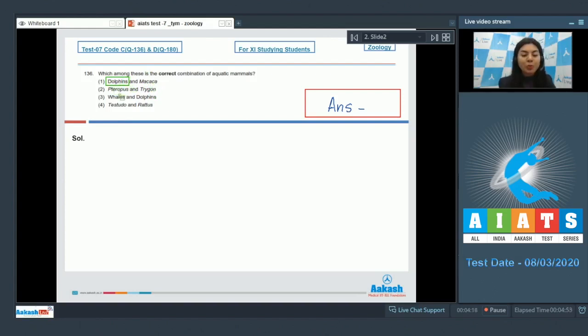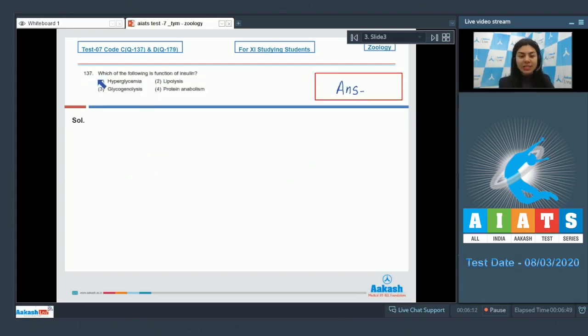Option number two: Pteropus and Trygon. Among this, Pteropus is a mammal but it's adapted for flying and hence called a flying mammal, while Trygon is a cartilaginous fish. Whales and dolphins in option number three, both are aquatic mammals, so this is the correct set of aquatic mammals. In option four, Testudo and Rattus, Testudo is a reptile and Rattus is a terrestrial animal. So the correct answer here is option number three. Other examples of aquatic mammals are sea cow, seals, etc.